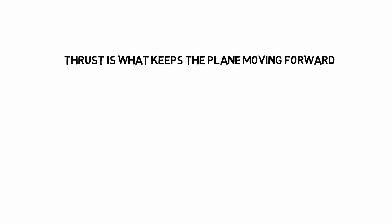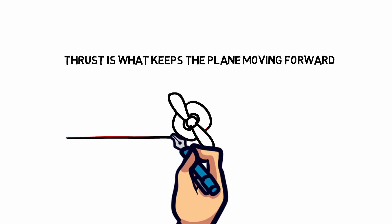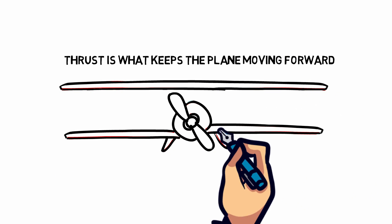Thrust is what keeps the plane moving forward. Depending on the plane, there are different methods to produce thrust. A jet will use its jet engine, while other planes, such as a crop duster, will use a propeller.